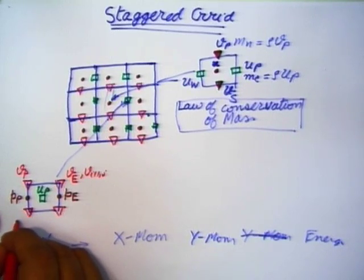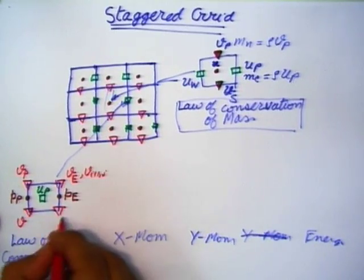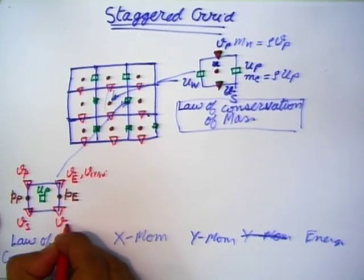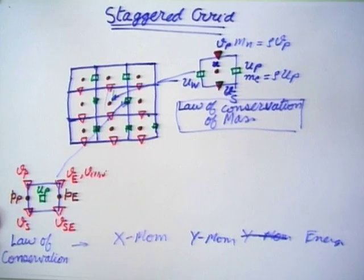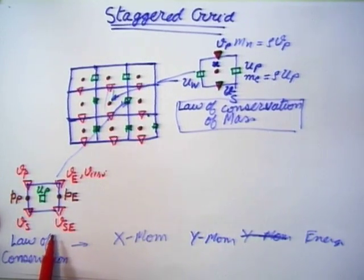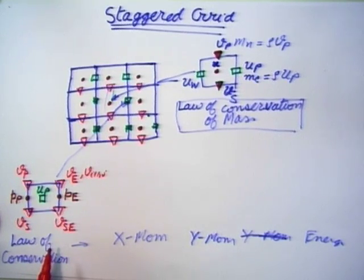The subscript for v at the bottom-left corner will be v_S, and the other corner will be v_SE, which is south-east. South corresponds to j−1 and east corresponds to i+1. This is for the x-momentum equation.